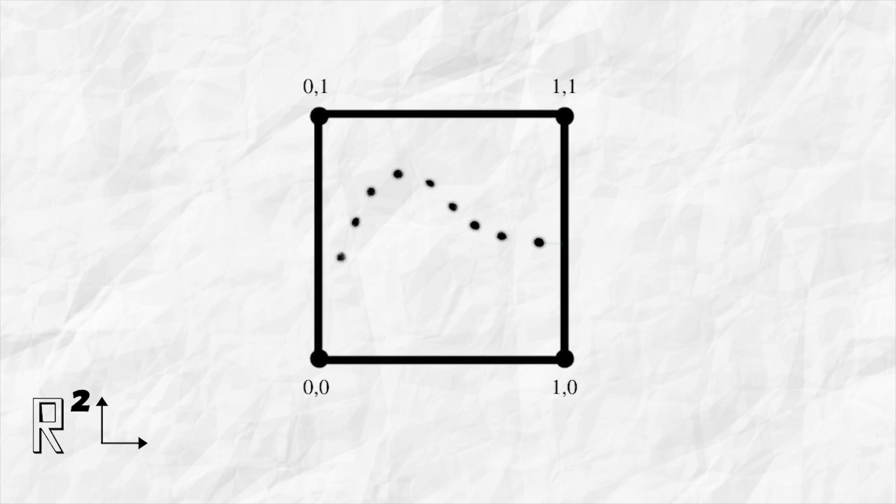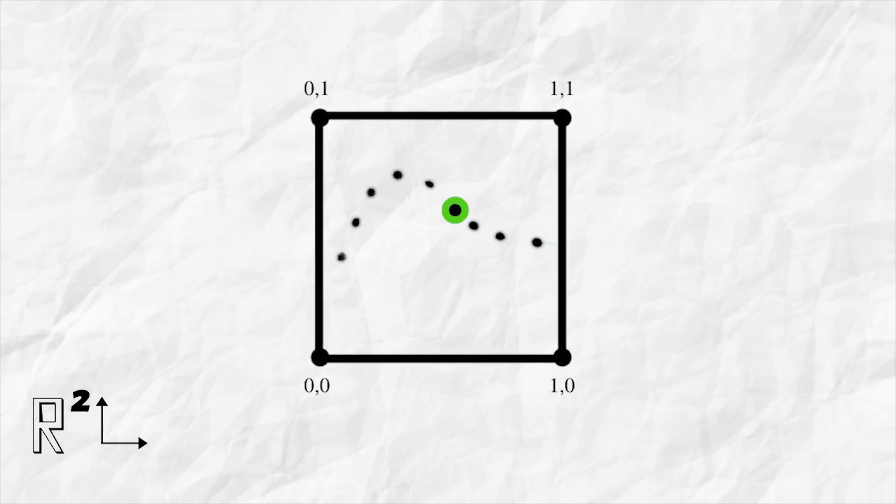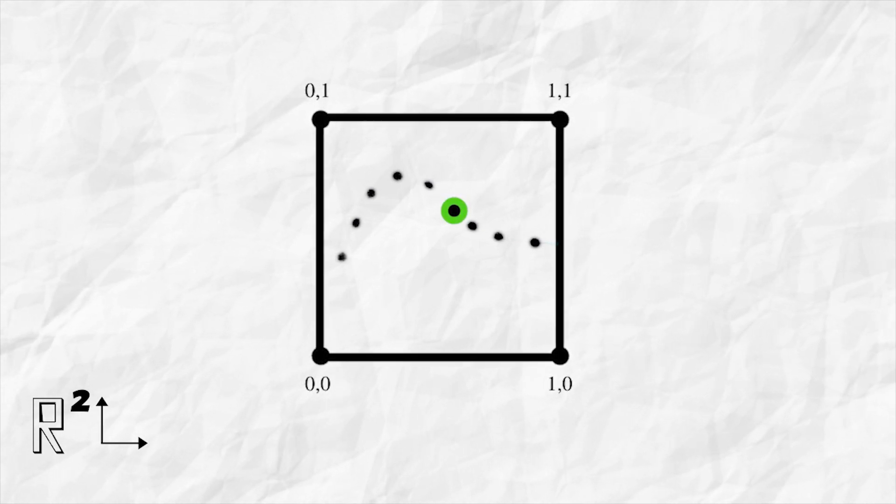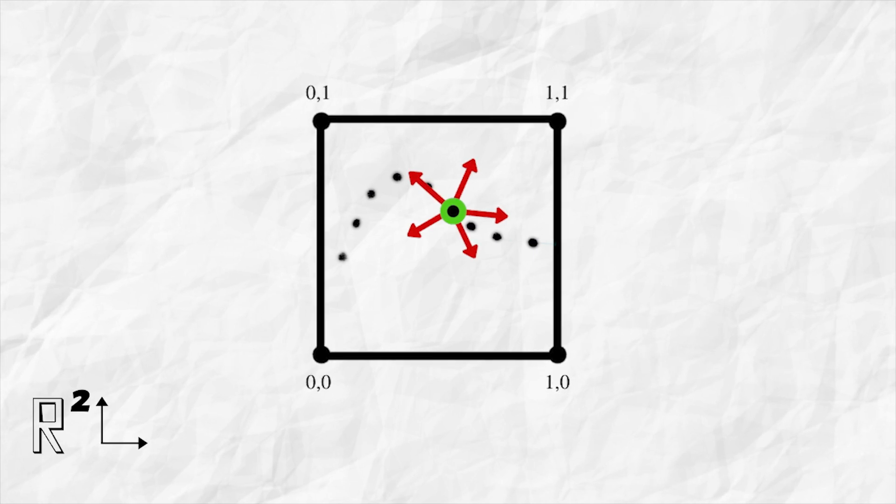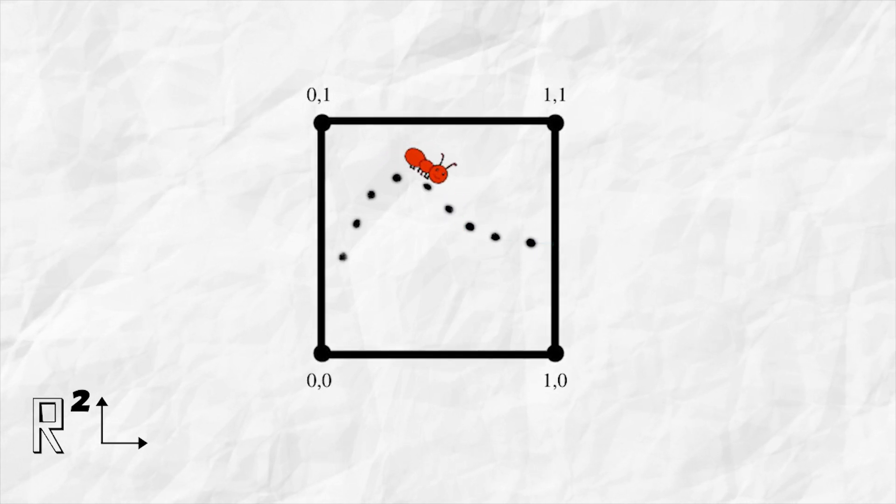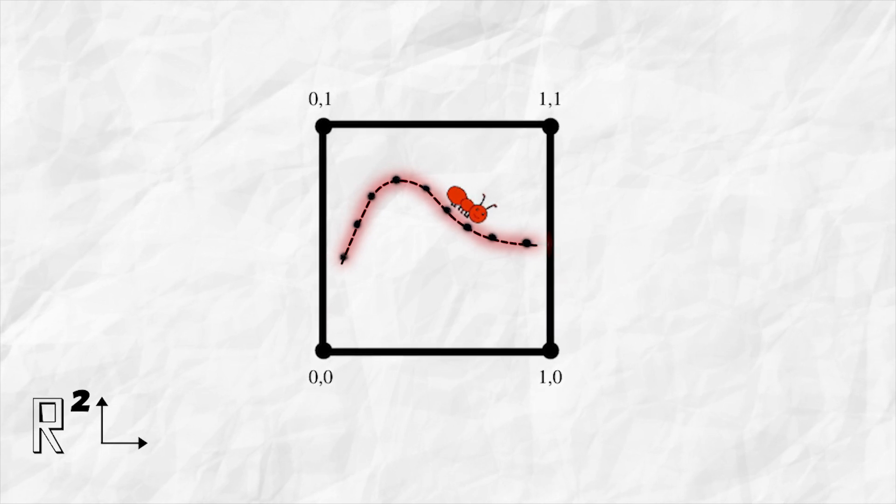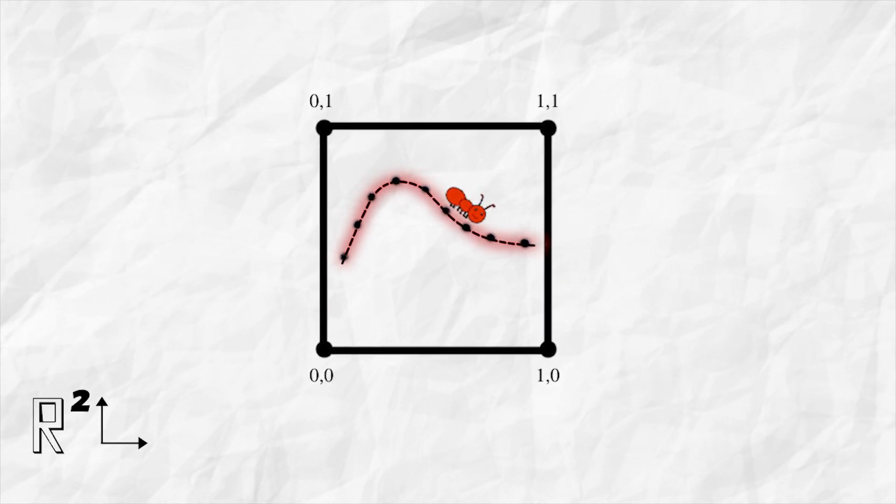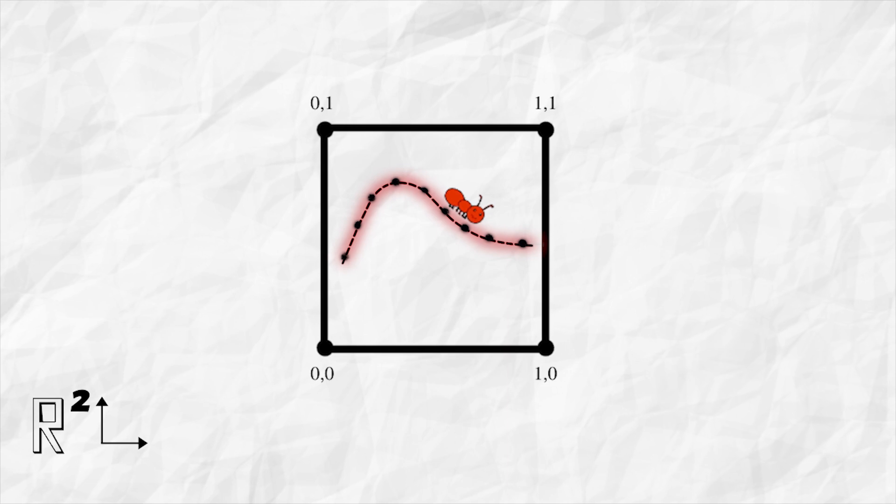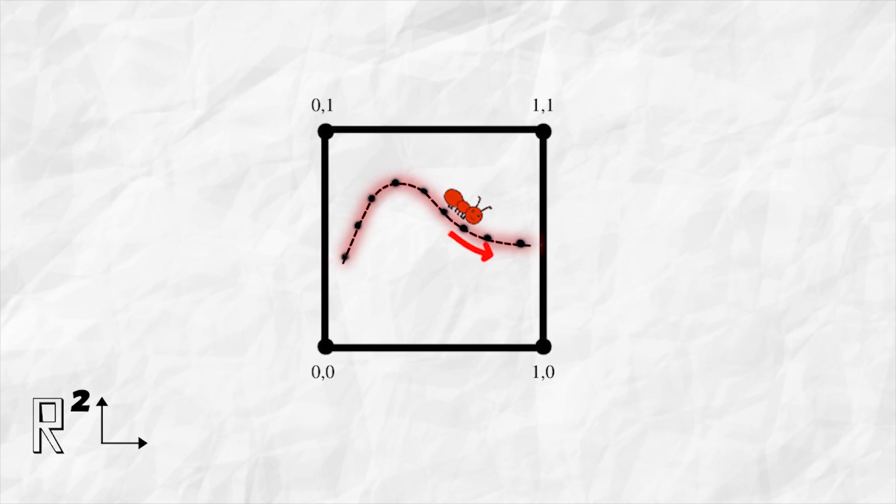To elaborate further, in R2, if we are at this position, we have the freedom to go in any of these directions. But an imaginary ant, which can only traverse on the manifold, sees the world as R1 and has limited degrees of freedom. The only directions in which it can go are front and back.